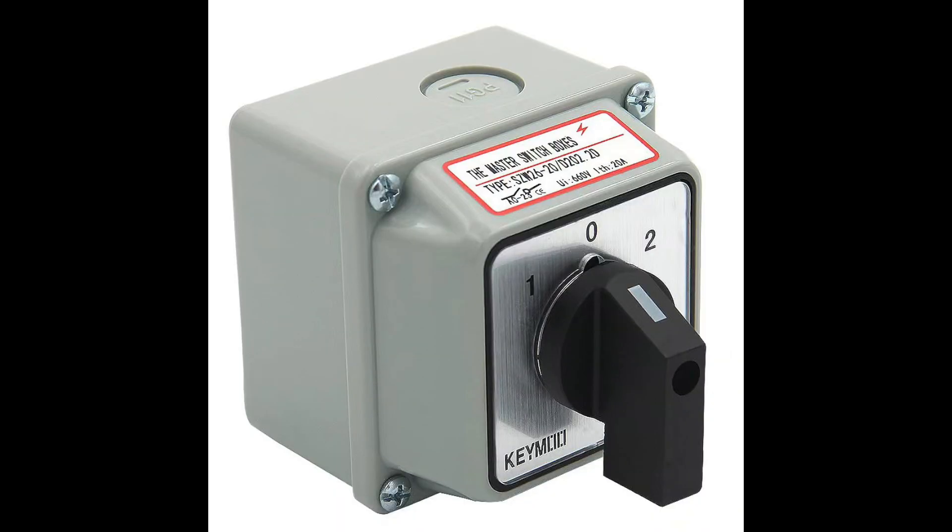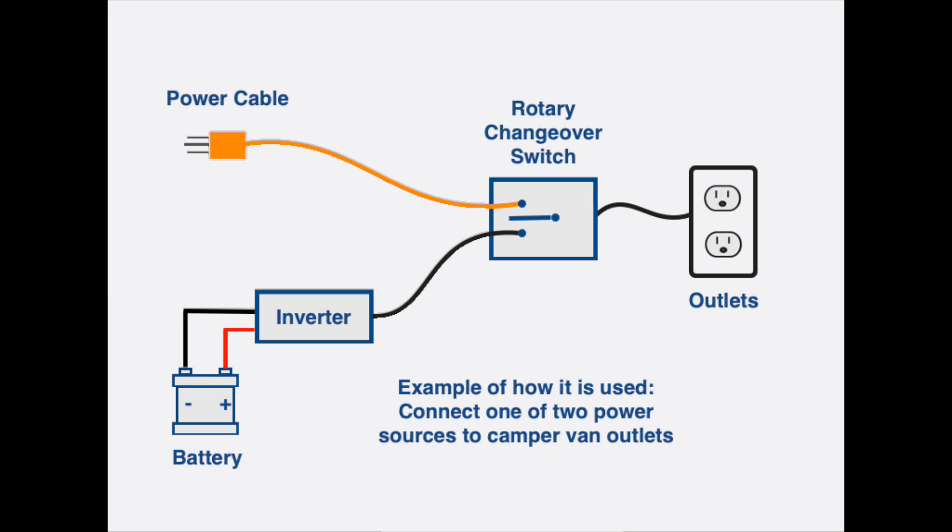A rotary changeover switch allows you to easily switch between two different power sources or circuits by rotating a knob. It has lots of uses, but one common example is in a camper van. If you are in an RV park, you want your AC outlets connected to the campground electrical grid, or to borrow a term from the boating world, shore power. When you are off the grid, you want your outlets connected to your inverter.